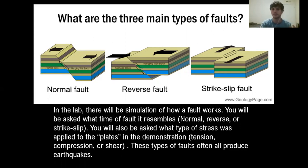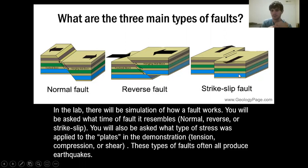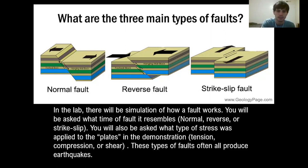The reverse of that is a reverse fault. Instead of diverging away from each other, the plates converge on each other — this is compressional stress, so the plates run into each other. This is found at a convergent plate boundary. Third is the strike-slip fault, found at a transform plate boundary. One big example would be the San Andreas fault — it's a strike-slip fault. Those are the three types of faults you'll be looking at for the first part of the lab.